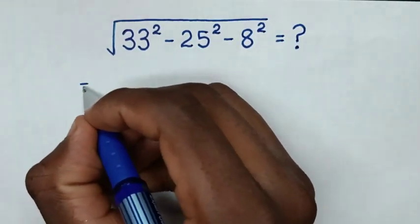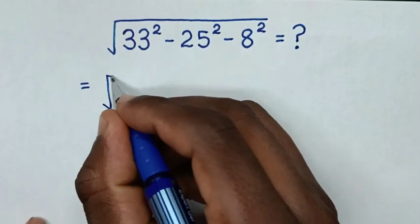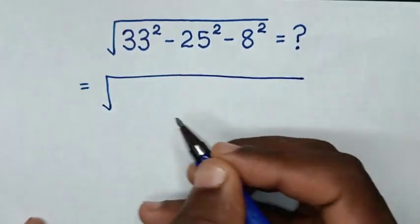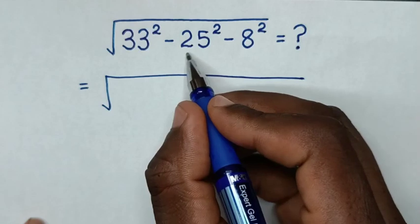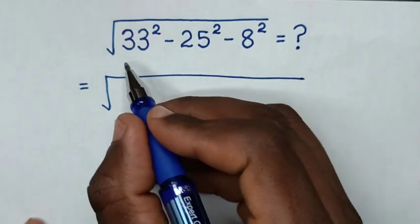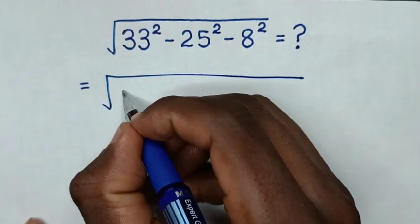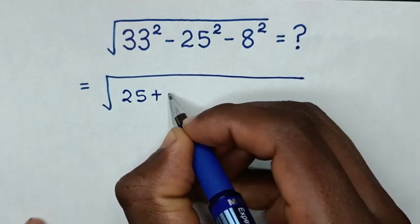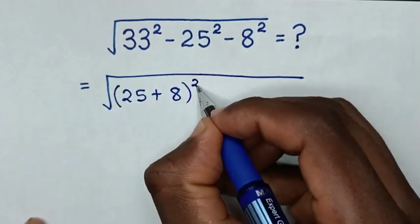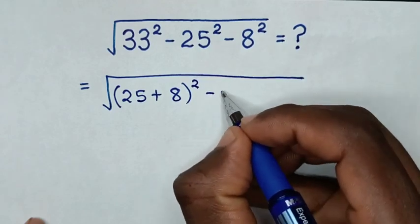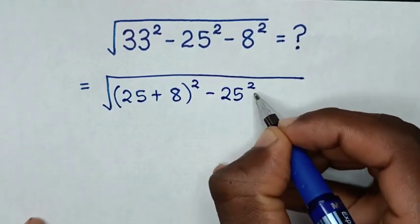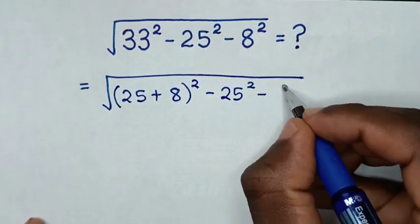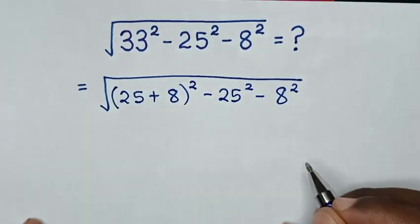So, it will be equal to square root of 33 is same as 25 plus 8. So, 33 square is same as 25 plus 8 bracket square, then minus 25 square, then minus 8 square.